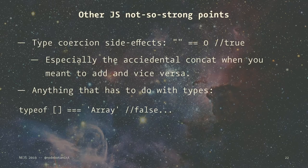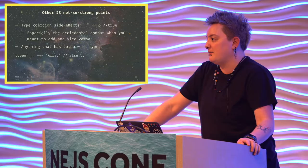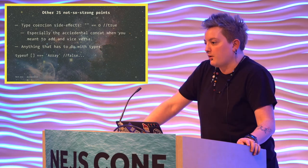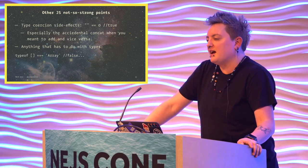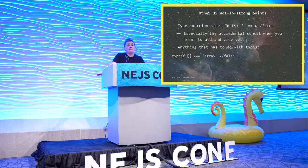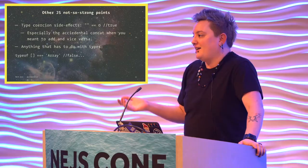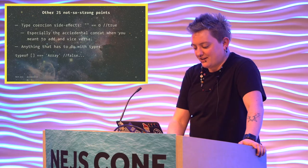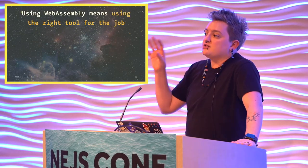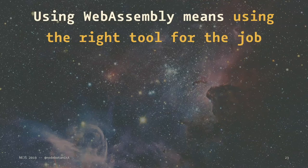Other JS not-so-strong points: type coercion side effects. String equal-equal zero is true — if you put the third equal sign in there it's false. Dealing with numbers and strings in JavaScript can be a pain because of the lack of a formal type system. And before you at me, yes, I know TypeScript exists — they even have a WebAssembly target. But typeof array is not 'array' — that's not a fun time.